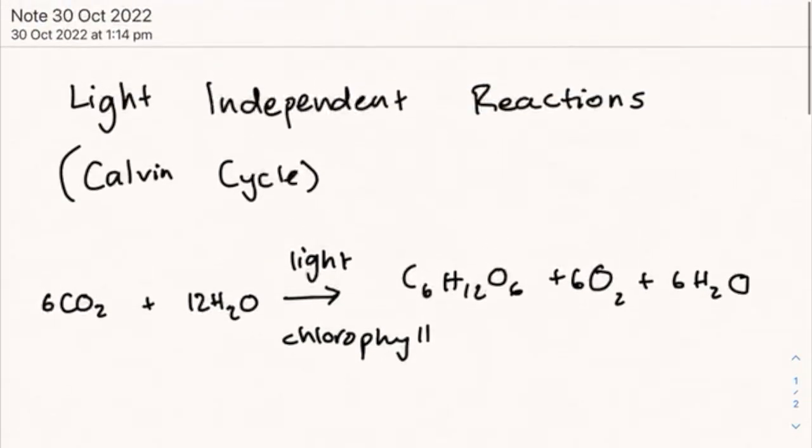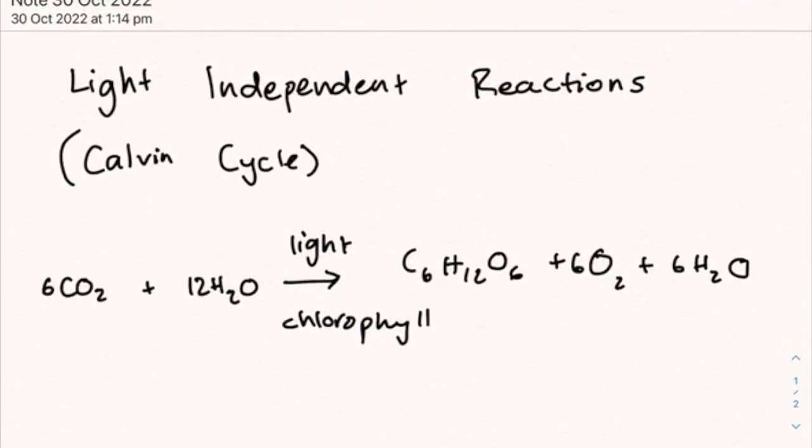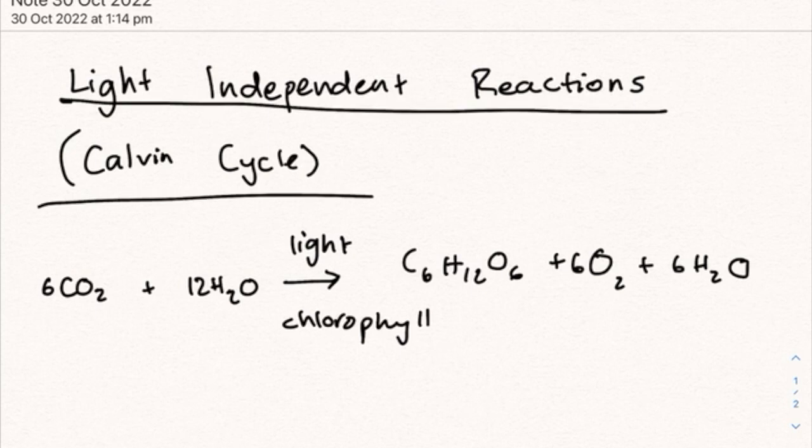Photosynthesis is a two-step process. The first step is the light-dependent reactions, or photophosphorylation. In these reactions, light energy is converted into chemical energy, or ATP. The second main step, which is the one that we're looking at today, is light-independent reactions, in which chemical energy is used to synthesize organic compounds.